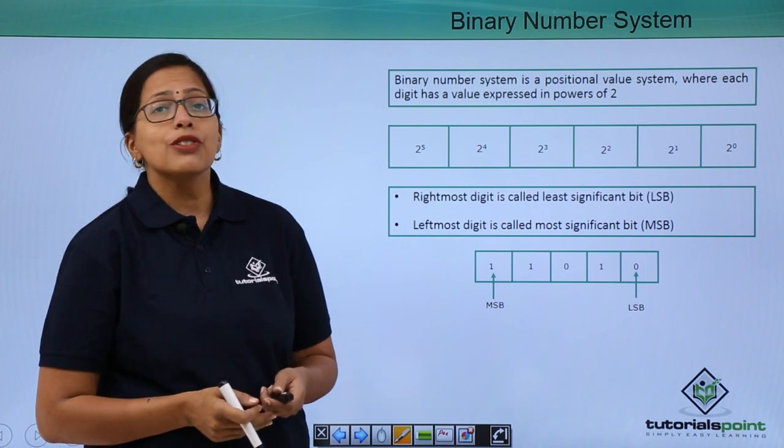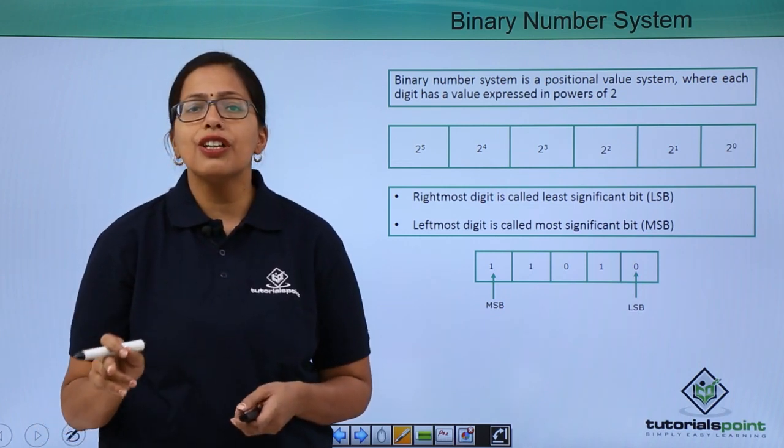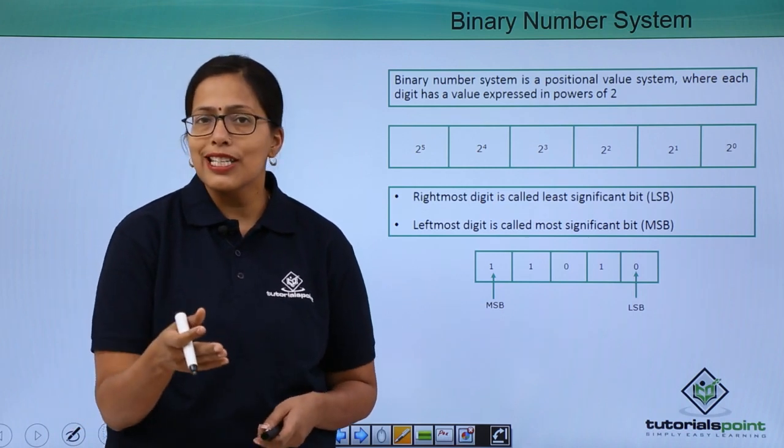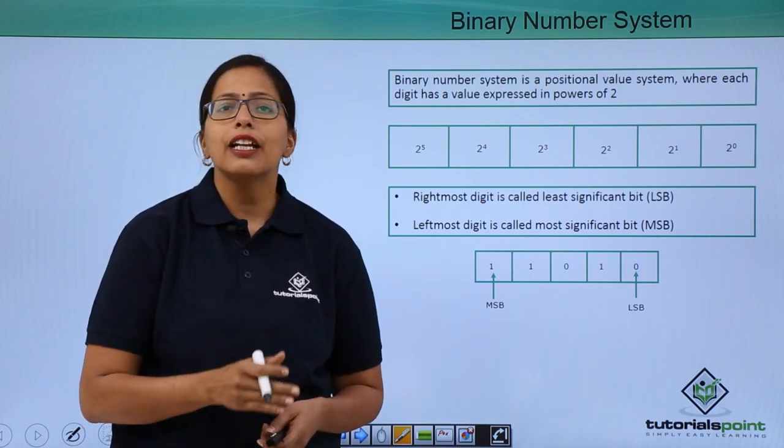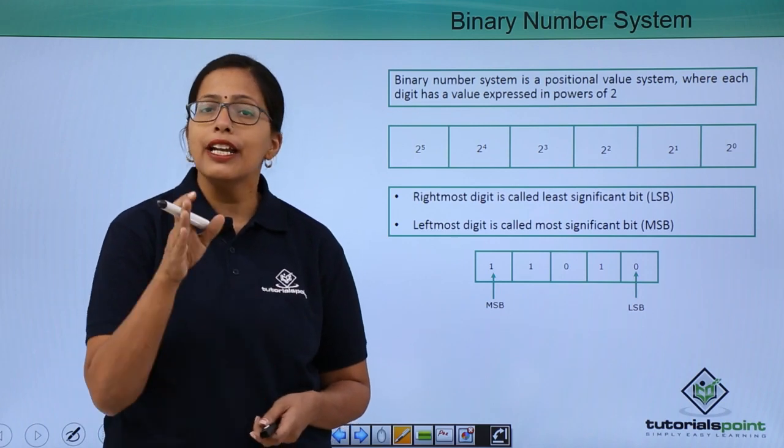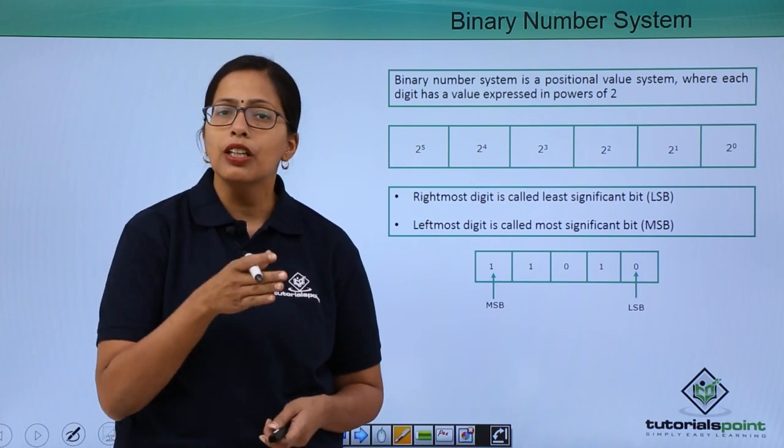Now, the binary number system is again a positional number system like a decimal number system. What does that essentially mean? It means that whatever bit or binary digit we are using, its value will depend upon the position.